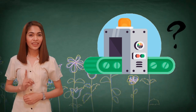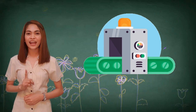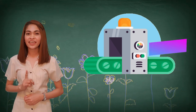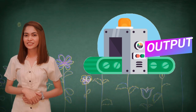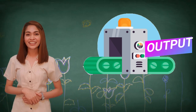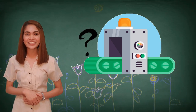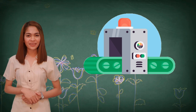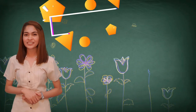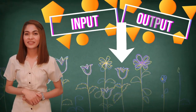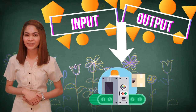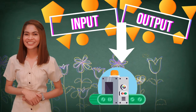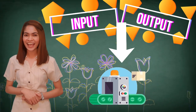Conversely, if we have our output and we know how the machine works, then we can easily determine an input. And if we examine the inputs and the outputs, we can easily determine that rule, which is actually known as the function.